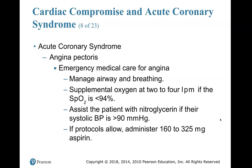Emergency medical care for angina: manage airway and breathing. Supplement oxygen at 2 to 4 liters per minute if SpO2 is less than 94%. Assist the patient with nitroglycerin if their systolic blood pressure is greater than 100 millimeters of mercury — note the medicine has changed, it's now 100, not 90. Nitroglycerin drops blood pressure, so be cautious if they're at 100–110. If protocols allow, administer 162 to 324 milligrams of aspirin.